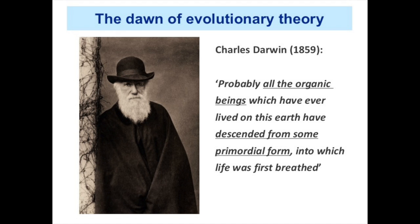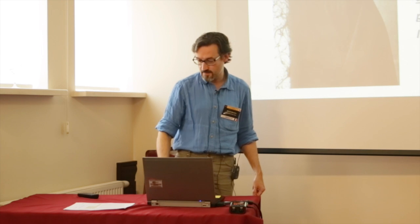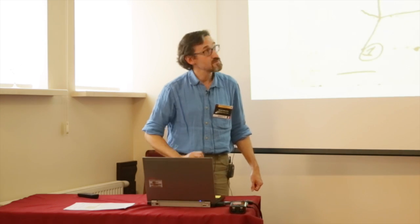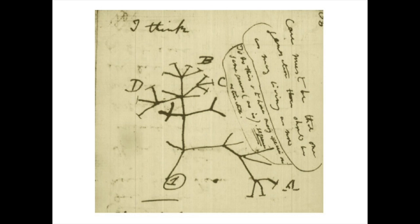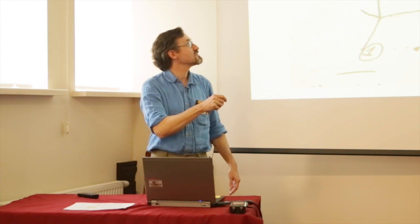The idea that all living beings derive from a single last common ancestor is already relatively old. Darwin was among the first to propose it in his famous book on the origin of species. One interesting point is that because all living beings derive from a common ancestor, you can study the evolution of different species using phylogenetic analysis, where the ancestors are the deep nodes in the tree.